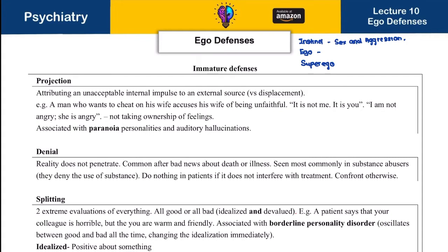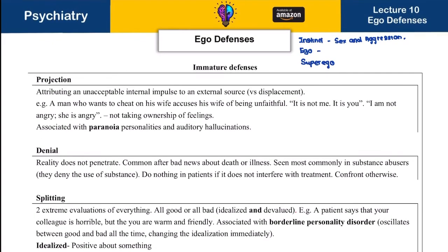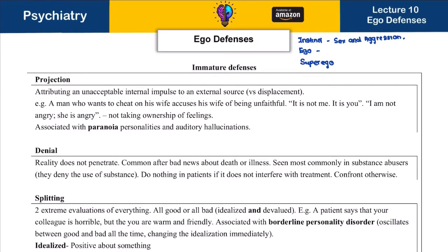Our topic today is ego defenses. There are three types. The first is immature defenses. Under that, projection — this is when you transfer your feelings to someone else. Whatever you want or think, you say it's not you, it's them. For example, a man who wants to cheat on his wife accuses his wife of being unfaithful — it's basically saying 'it's not me, it's you.'